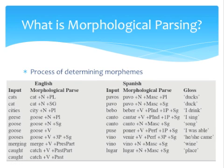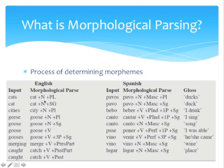So what is morphological parsing? Morphological parsing is a process of determining these morphemes. In our first example, the input is 'cats,' and after morphological parsing we have 'cat + N,' which states that it's a noun, and then '+ PL,' which states that it's plural. And then we can look at 'cat + N,' which says it's a noun, and '+ SG,' which says it's singular.